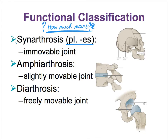The prefix 'syn' — think of the term synapsis — refers to 'together.' And 'arthra,' as in arthritis, meaning inflammation of joints, refers to joints. So synarthrosis means joints together, and therefore these are immovable joints. The seams in our skull are examples of immovable joints, better referred to as synarthroses.